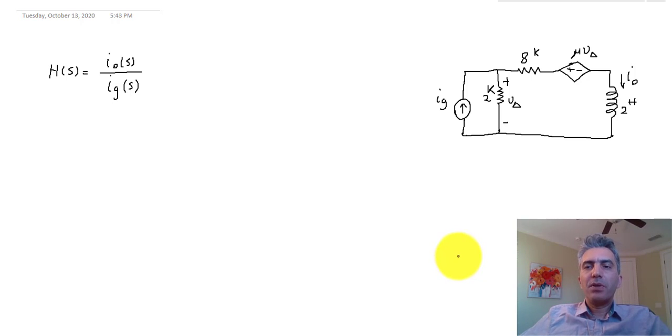Hello everyone. In this video we are going to practice calculating the transfer function in a circuit. In this specific problem the transfer function is defined as the current of the 200 mH inductor over the current of the current source. So your output is the current of the inductor and the input is the current of the source.